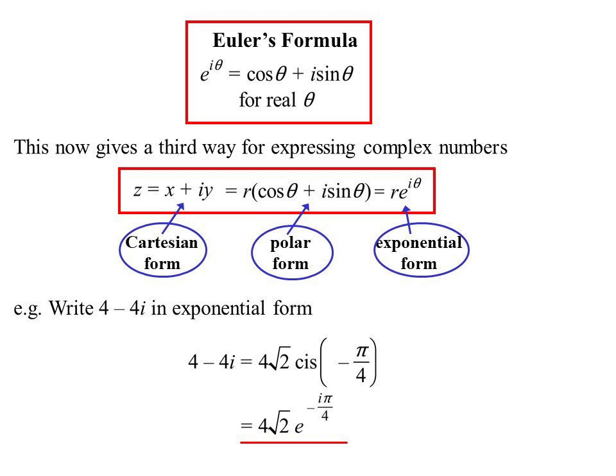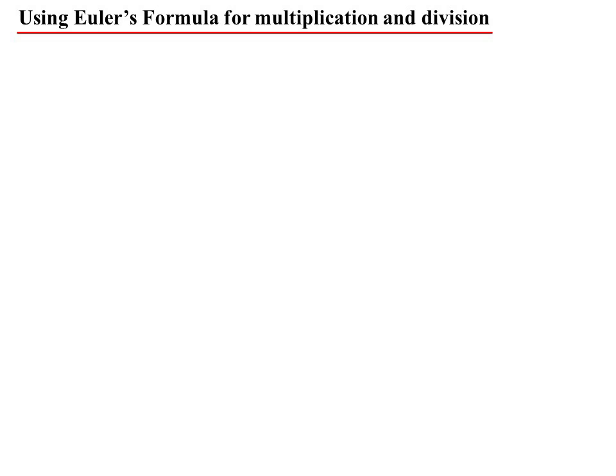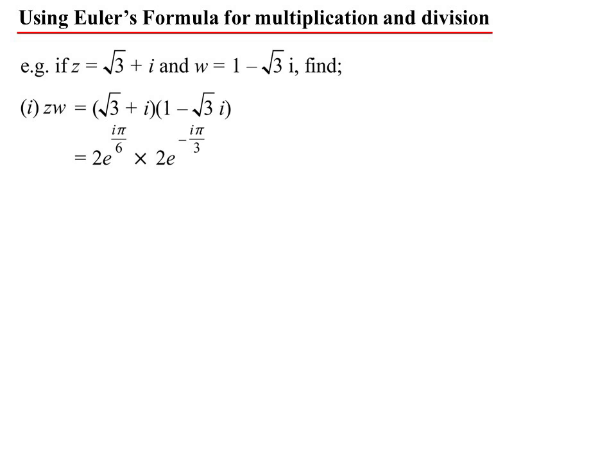Now we can use exponentials to do multiplication and division. Here's my two complex numbers: root 3 plus i and 1 minus root 3i. What would z times w be? If I move it in exponential form, root 3 plus i, its modulus is 2, its argument is pi on 6. And 1 minus root 3i, modulus is also 2, its argument is minus pi on 3. We're just multiplying two exponentials together. This also explains why when we're multiplying, we multiply the modulus but we add the arguments, because we're really playing with index laws. When we multiply, we add the powers, and that's where it comes from. If I want to find the number, I'll put it back in mod arg form because it's easier to work out the number there, and that would be 2 root 3 minus 2i.